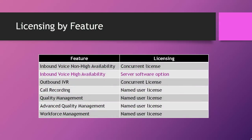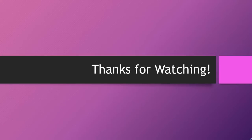Licensing by feature: inbound voice — with or without high availability — and outbound IVR use concurrent licenses. The Server Software Option license is required when deploying UCCX in a two-node cluster. Features like recording, quality management, AQM, and WFM require named user licenses because the user ID is tied to the license. That concludes this section. See you in the next section — thanks for watching.